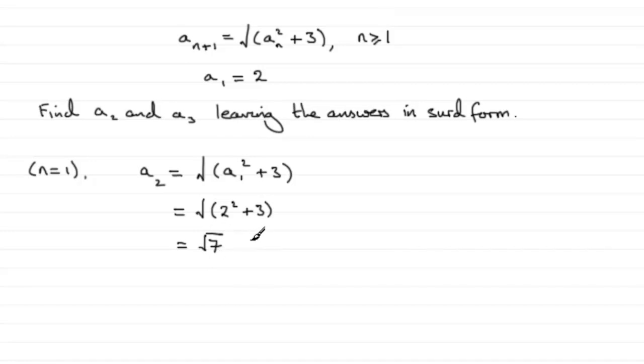Now we just need to get the third term in the sequence, a3, and we can do that very easily by just putting n equal to 2. So when n equals 2, we have a2 plus 1, a3. And that's going to be equal to the square root of a2 squared plus 3.